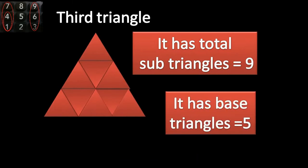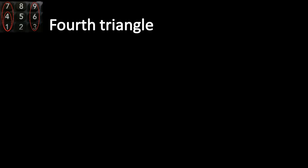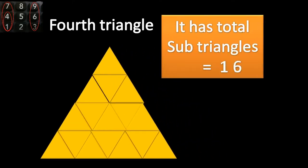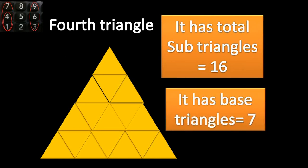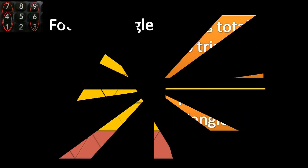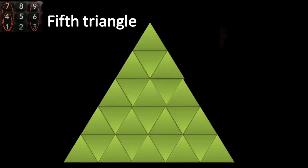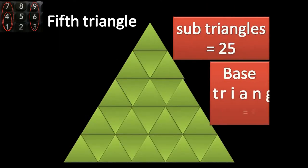It has total sub triangles 9 and base 5. As you can visualize, the fourth triangle has sub triangles 16 and base triangles 7. The fifth triangle is much much larger with 25 sub triangles and base 9.